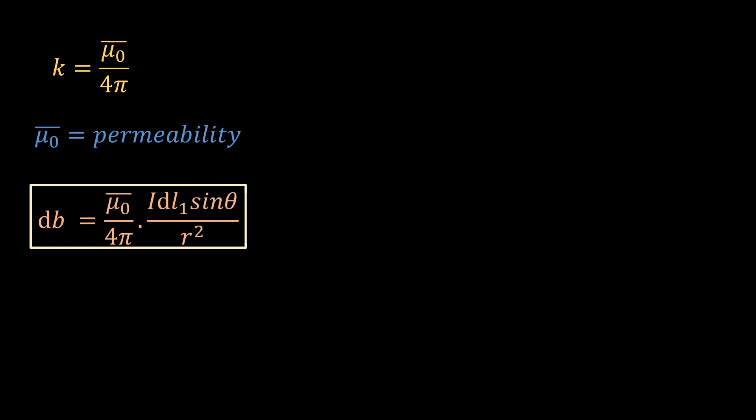The constant of proportionality k can be expressed as μ₀/4π, where μ₀ is the permeability of the medium. Permeability is a measure of the extent to which magnetic fields are impeded by a medium, and since it exists for magnetic fields due to charge, it should also exist for magnetic fields due to masses. So the full expression for the Biot-Savart law is as follows.